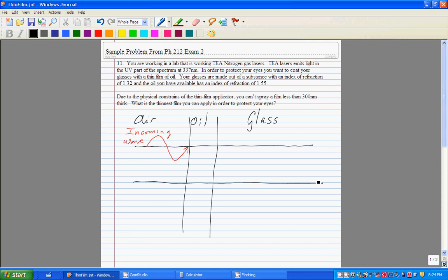Now this wave is going to hit the interface between air and oil, and it's going to be partially reflected and partially transmitted. We need to recognize the indexes of refraction: the index of refraction of air is 1, roughly. The oil in this case has an index of refraction of 1.55, and the glass has an index of refraction of 1.32. Whenever a wave goes from a low index of refraction to one that's higher, we get a phase shift of pi, or an inversion of the reflected wave.